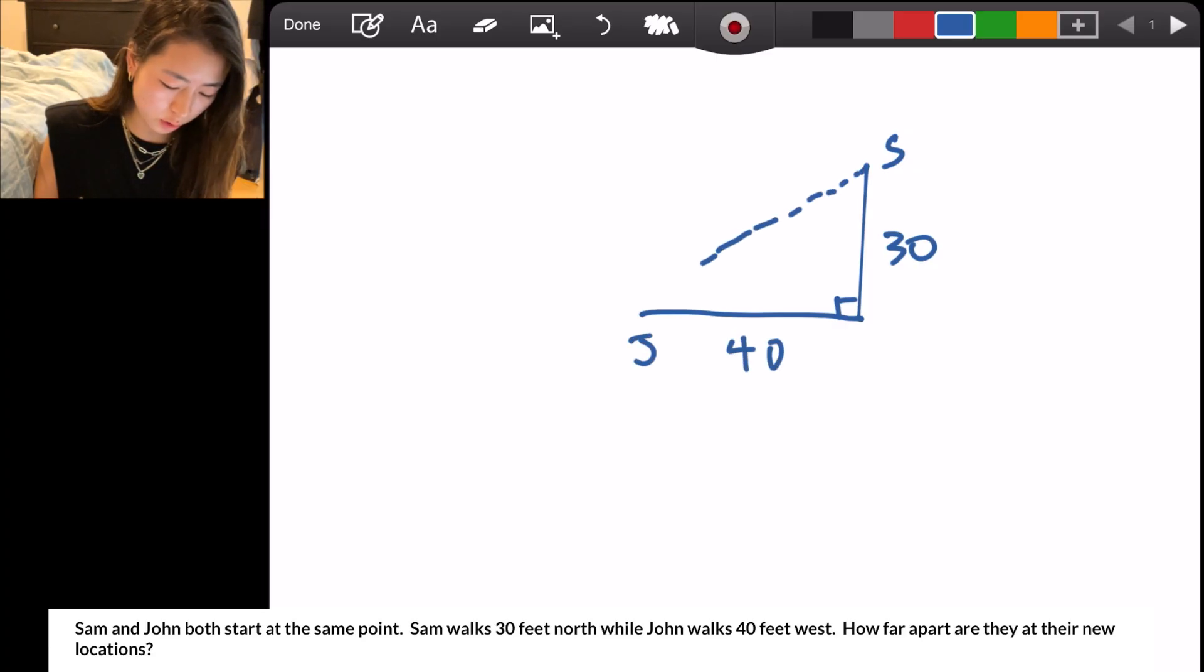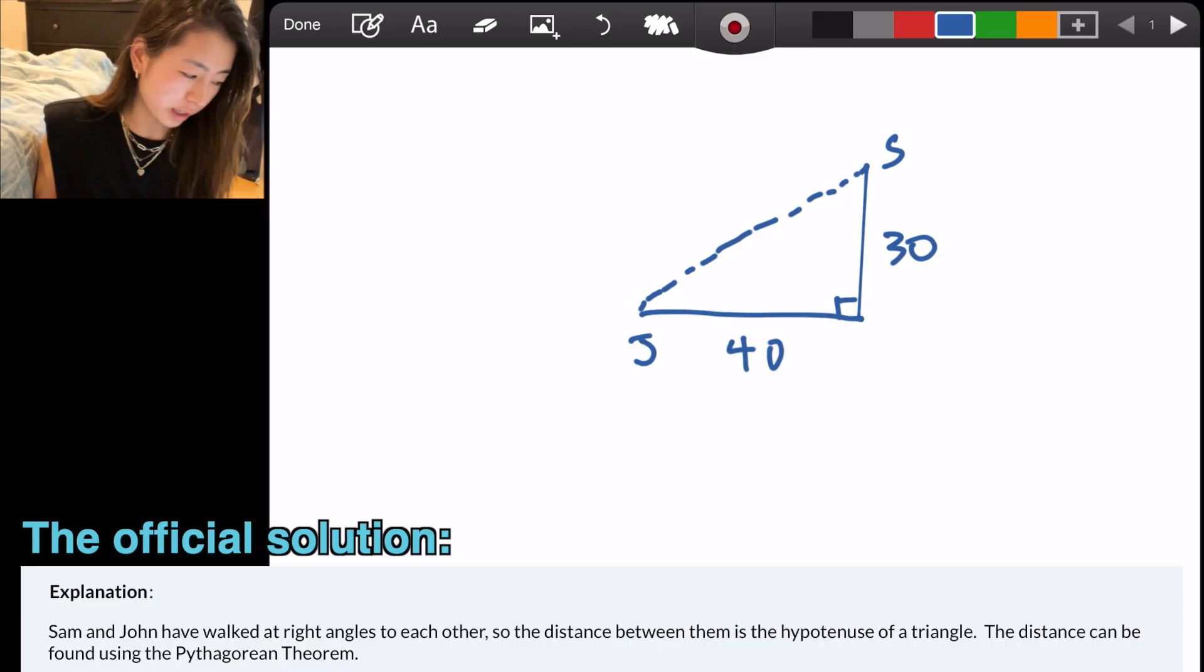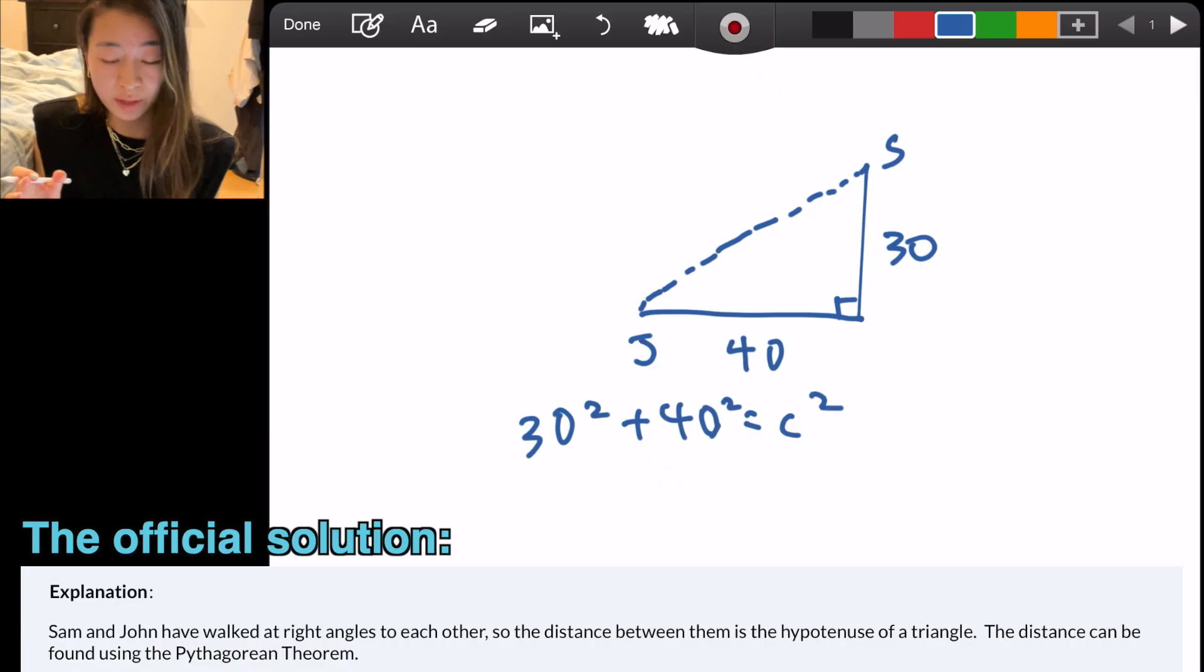The distance between them is, whoa, this line, and it looks like the hypotenuse. So just like the answer explanation here, we can just do the Pythagorean theorem where we have 30 squared plus 40 squared equals c squared. Okay sure, maybe you can solve this in 60 seconds, but I'm going to show you how to do it in 5 seconds.